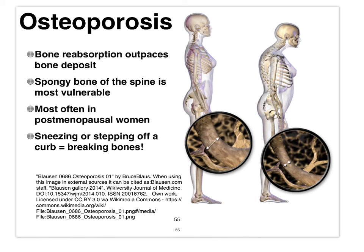This wraps up the skeletal system. We've talked about ossification in the embryo, bone growth in children, and bone remodeling in adults. Prior to that, we were introduced to the anatomy of bones all the way to the microscopic level.